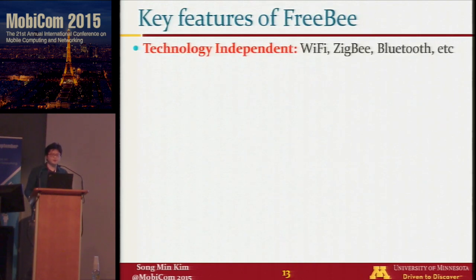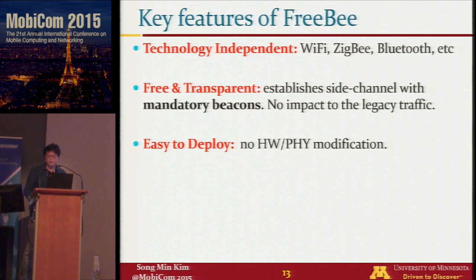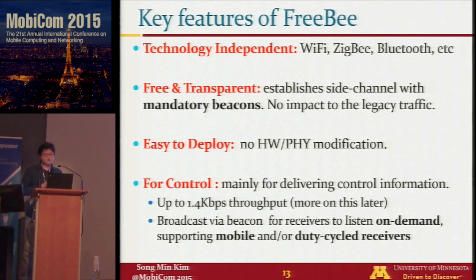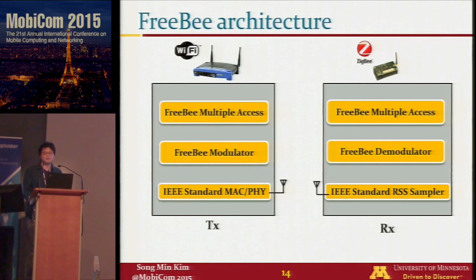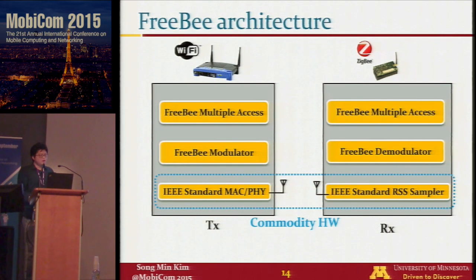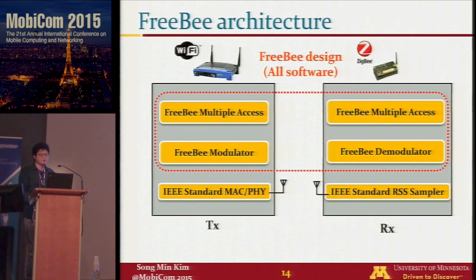The key features of Freebie include technology independence. It is free and transparent because it establishes a side channel using mandatory beacons, so there is no impact to legacy traffic and it is easy to deploy without any hardware or firmware modification. It is mainly for delivering control information with a limited throughput of up to 1.4 kbps. This is the architecture of Freebie — note that the sender and receiver are under different wireless technologies. The bottom two components are commodity off-the-shelf hardware, and the Freebie design is all software sitting on top.